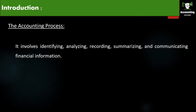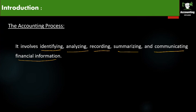The Accounting Process involves: first, Identifying — you have to identify whether it is an expense or an income. Then Analyzing — you have to analyze whether you are going to debit it or credit it. Then the next step is Recording the transaction. Then Summarizing the transactions. And finally, Communicating the summarized financial information to the higher authorities or whoever is asking for it.